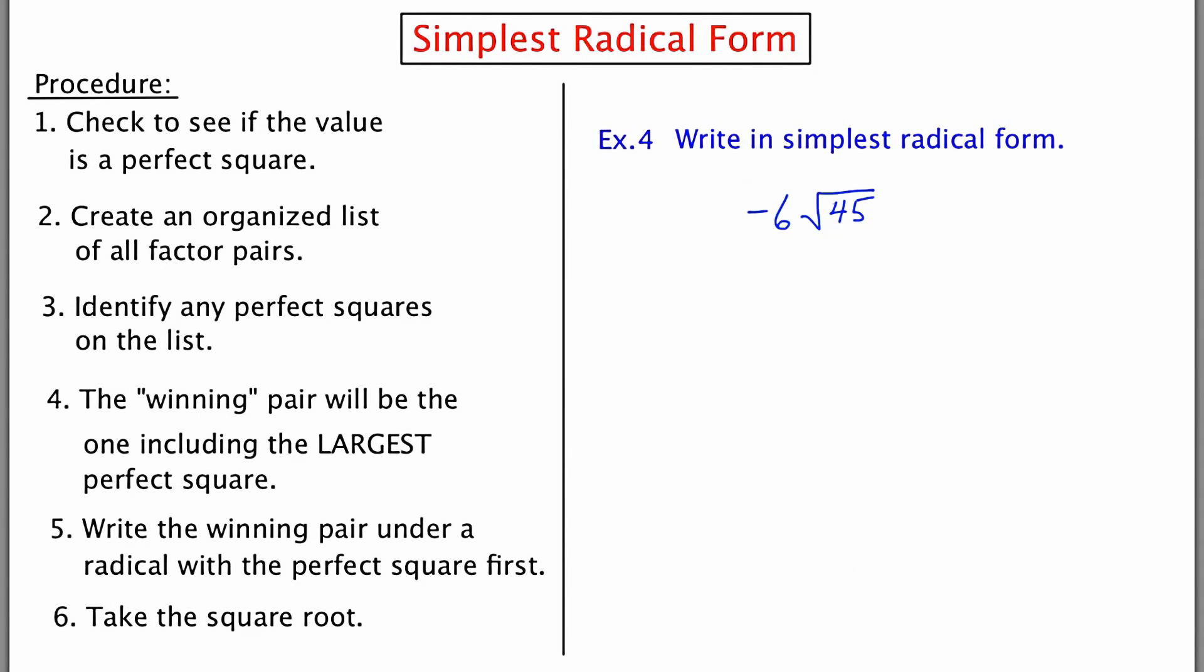For our last example, we're going to be finding the product of negative 6 and the square root of 45. So like example 3, we're going to start by taking that negative 6, which is just a number out in front, and just casting it off the side. Now, the number 45 is not a perfect square. So I'm going to make my organized list, starting with 1, 1 and 45.